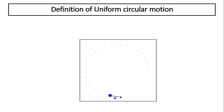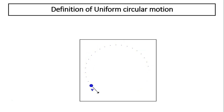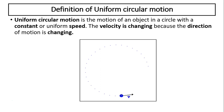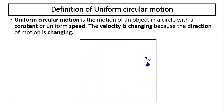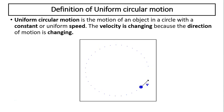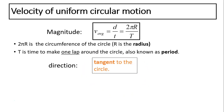Definition of Uniform Circular Motion. This is the animation for an object in uniform circular motion. From this animation, you can infer that uniform circular motion is the motion of an object in a circle with a uniform speed. Velocity is changing because the direction of the motion is changing.